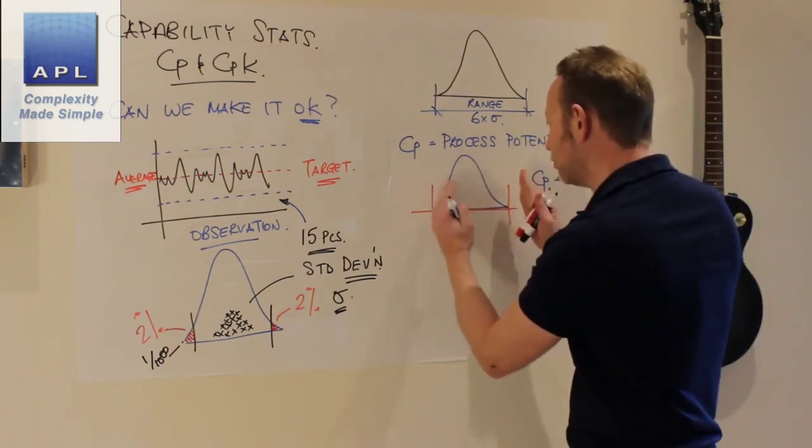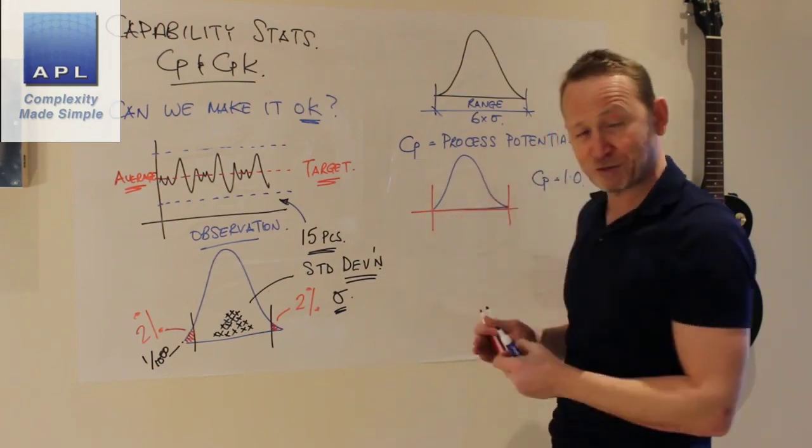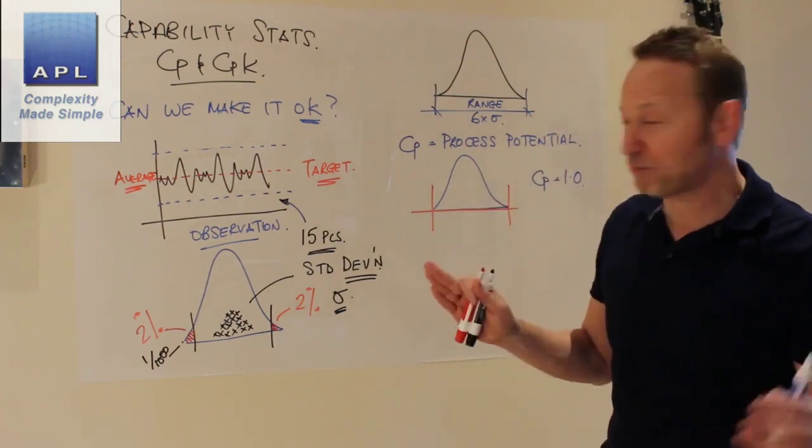That's a CP of one. Potentially we fit inside the tolerance. And it's just width, the width versus width, the width of the tolerance versus the width of the process. That is CP, width by width. Potentially, can we fit?